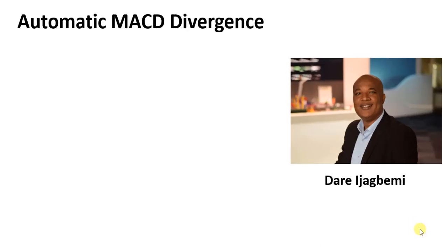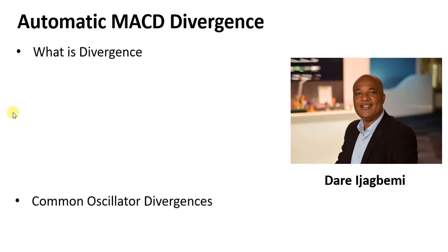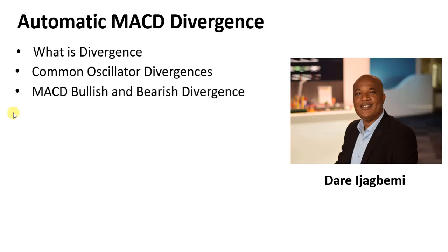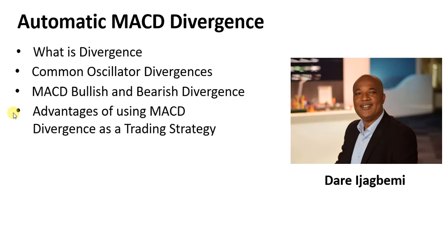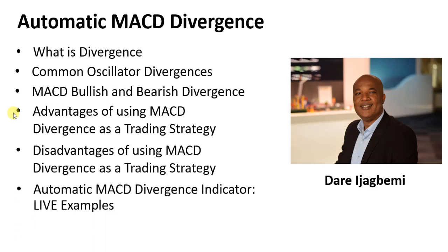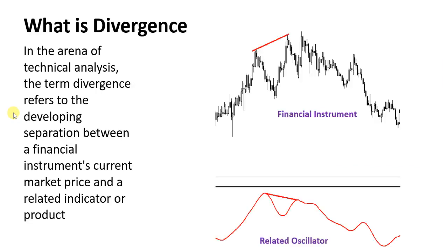Hello everybody, this is Darry here, hope you're well. Today we want to look at a MACD divergence — an automatic MACD divergence. We're going to start by looking at what is a divergence, then talk about the common oscillators we use to find divergences, then the bullish and bearish divergence, the advantages and disadvantages of using MACD divergence as a trading strategy, and finally we'll look at the indicator in a live chart.